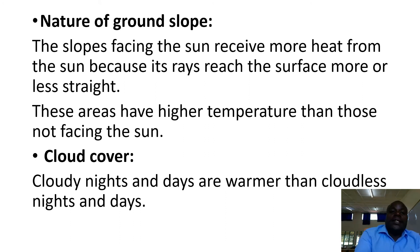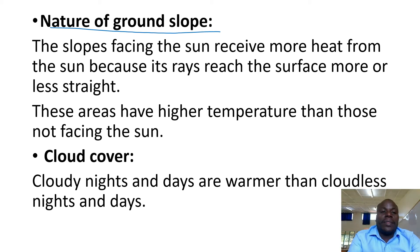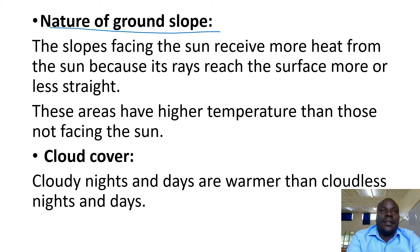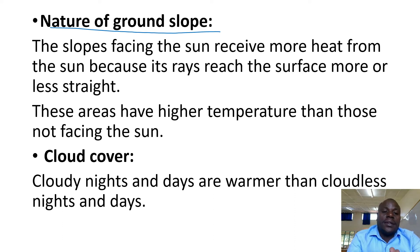Next, we have the nature of the ground slope, which can be simplified by calling it the aspect — the angle at which the slope is located towards the sun rays. Some slopes are directly facing the sun and therefore receive more sun rays than other slopes which are hidden from the sun rays. Slopes which are directly facing the sun are hotter than slopes which are hidden from the sun rays.